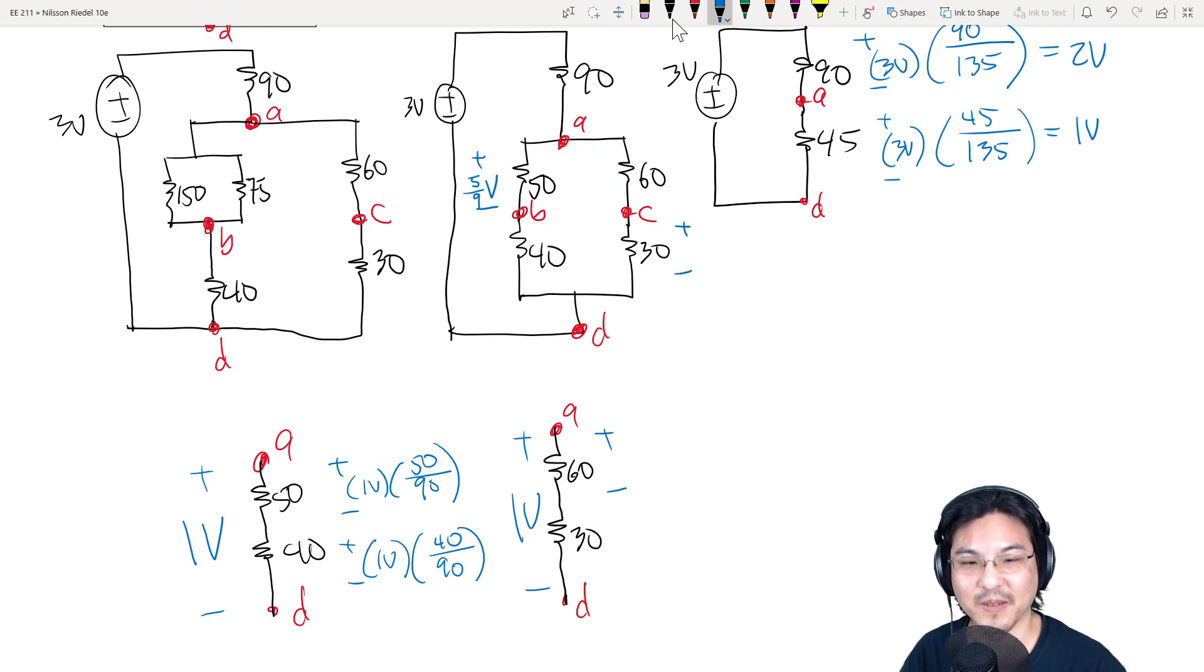So if you only want the voltage here, it's 1 volt times 60 over 60 plus 30. If you want the voltage from here to here, it's 1 volt times 30 over 60 plus 30. All right, so the voltage over here is 2 thirds. The voltage here is 1 third. So that's it right here, 1 third. So that's the answer.